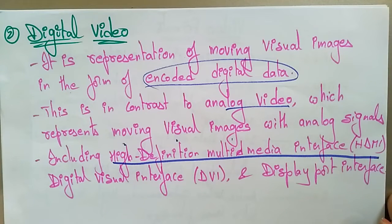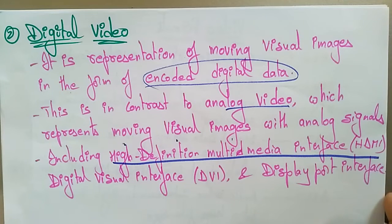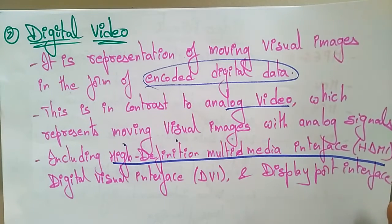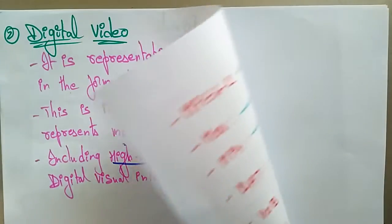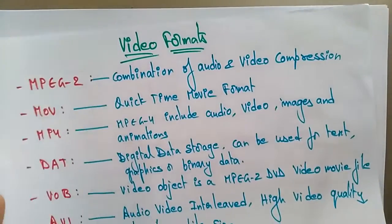Digital video interfaces include the high definition multimedia interface (HDMI), digital visual interface, and the display port interface. So these are the two different types of video.